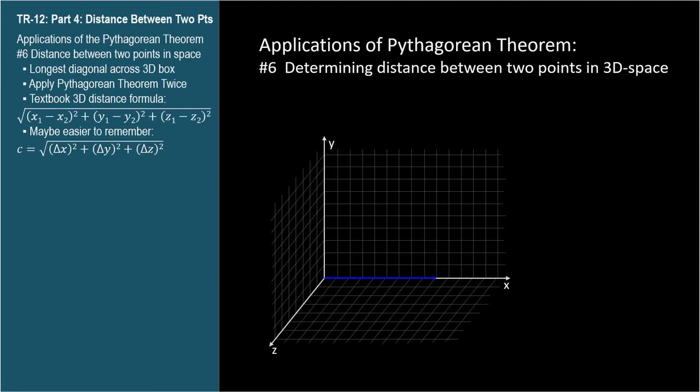Let's imagine a point x units along the x-axis, y units along the y-axis, and z units along the z-axis. So its coordinates are x, y, z. We want to know the distance from the origin to this point.